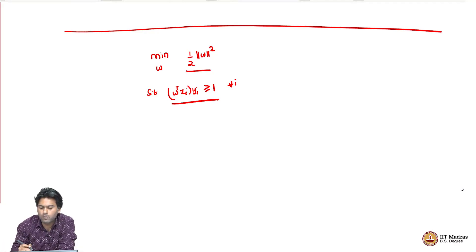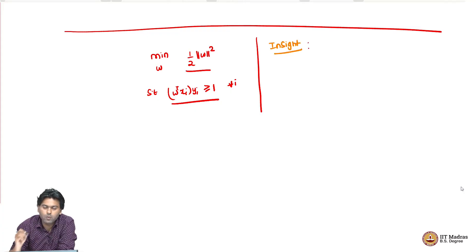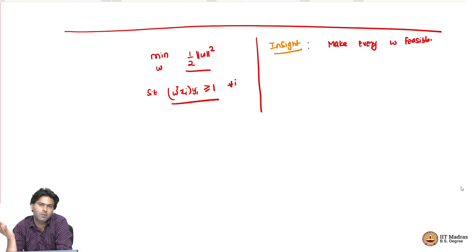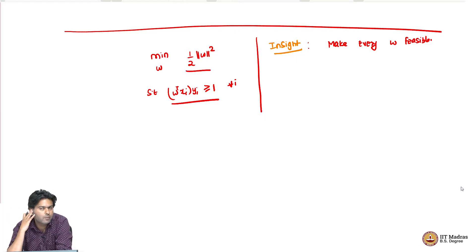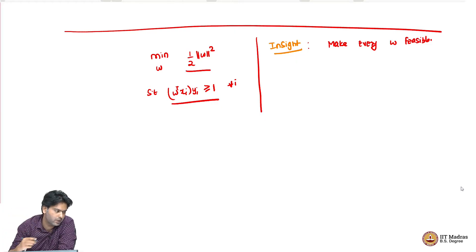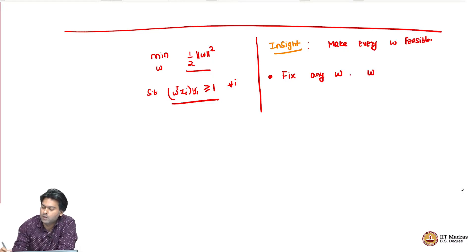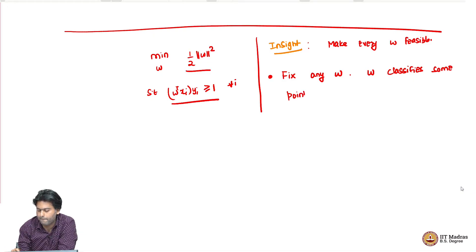We have to fix this problem when you have outliers, and the way we are going to do it is using the following idea: we are going to make every W feasible. Earlier, only W's which correctly separated the positives from the negatives were feasible. Now we are going to make every W feasible. Intuitively, fix any W — it classifies some points correctly and misclassifies some others.